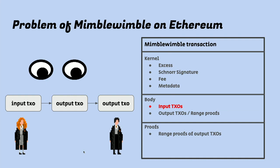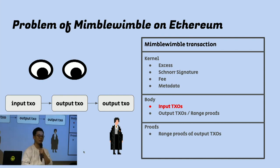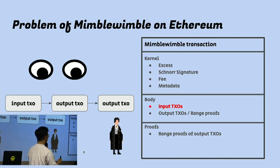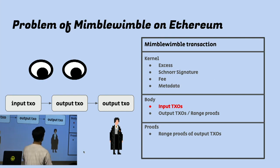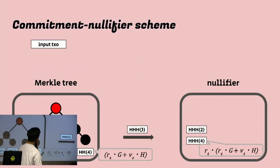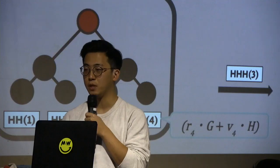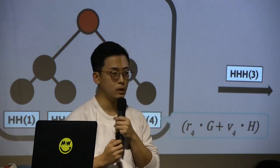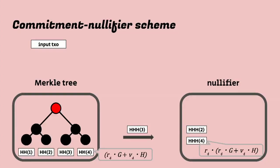As we've been told today, the problem is linkability — everyone can see the inputs and outputs and can trace transactions. One of the important goals was to break the linkability. I decided to combine the Zcash commitment-nullifier scheme together with MimbleWimble. This is possible because Ethereum is programmable, so we can use Zcash-style scenarios.